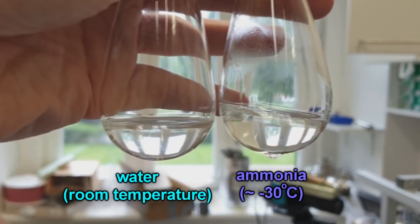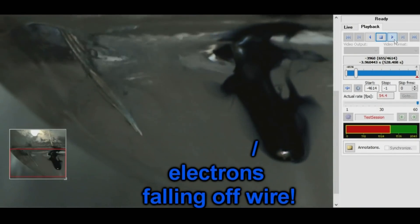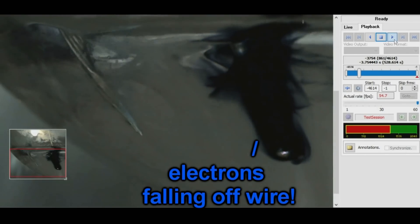And when they do, they give these incredible blue solutions that are actually due to the dissolved electrons. Yeah, that blue color there is actually just electrons sat there in ammonia.